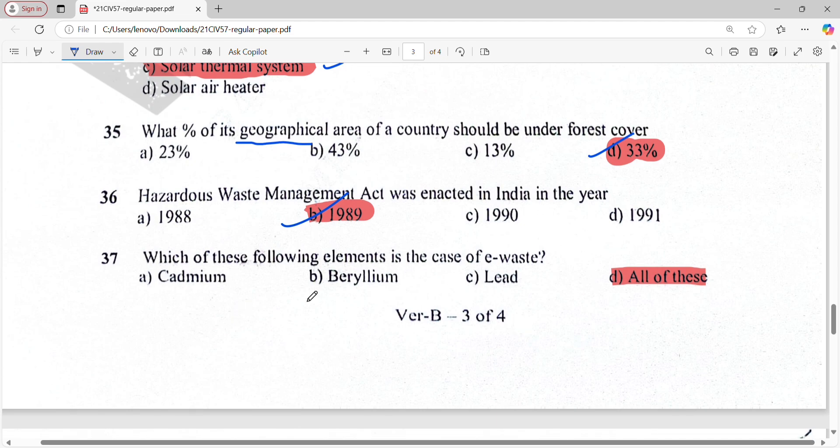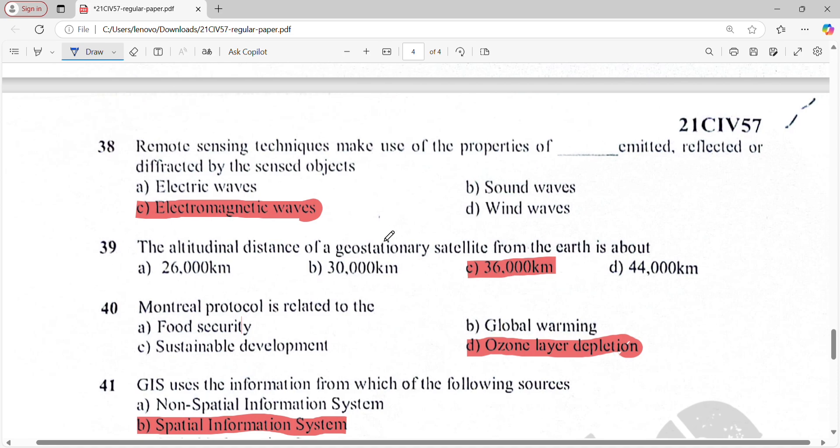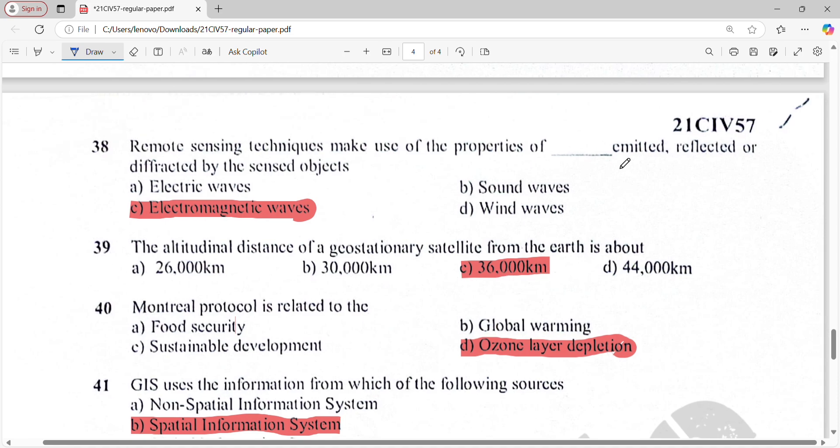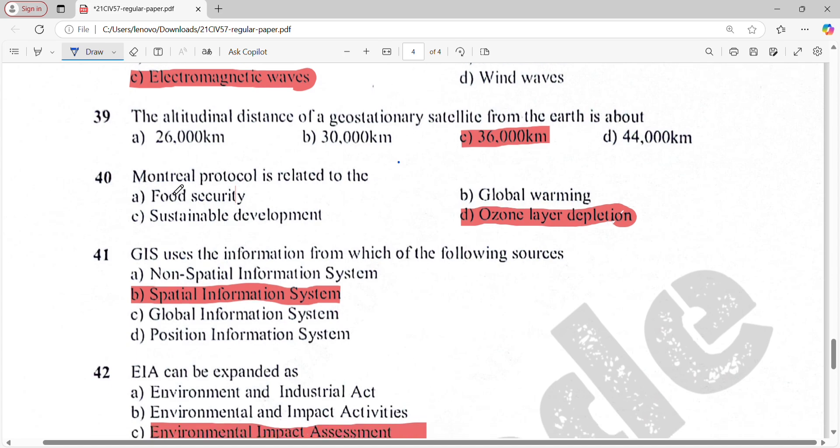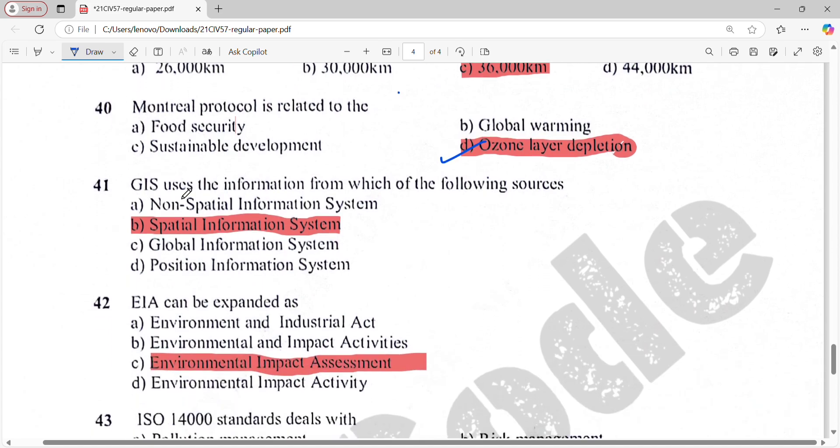Remote sensing techniques make use of properties emitted, reflected, or deflected by the sensed object - electromagnetic waves. The altitudinal distance of geostationary satellite from Earth is about 36,000 kilometers. Montreal Protocol is related to ozone layer depletion. GIS uses information from spatial information systems.